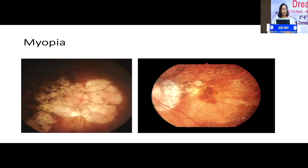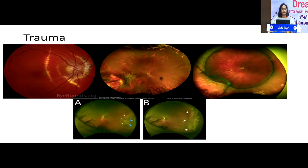When anterior vitreous cells are present, we look specifically for intermediate uveitis and indent to see for snow banking and snowballs. We must screen patients with myopia, which may be associated with myopic macular degeneration, posterior staphylomas, and angioid streaks.